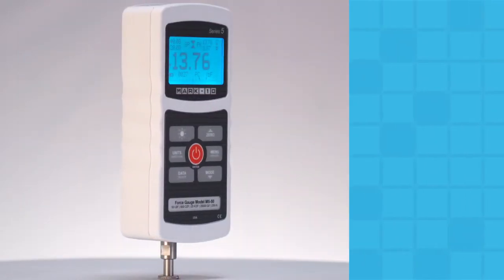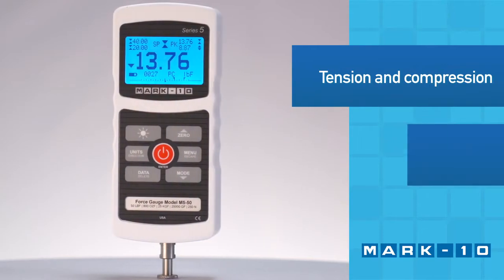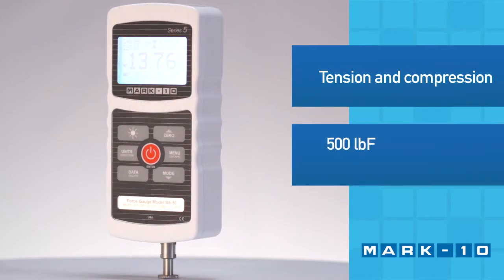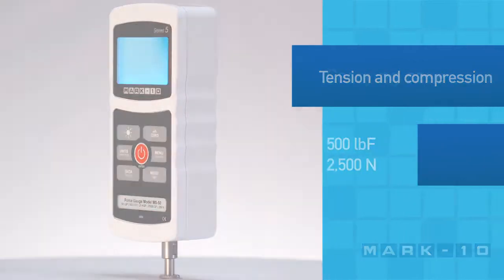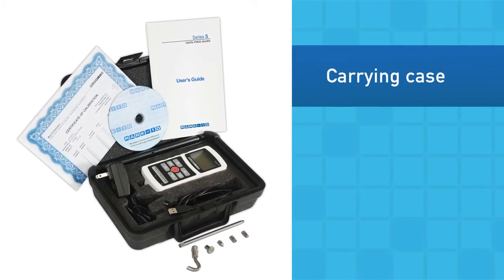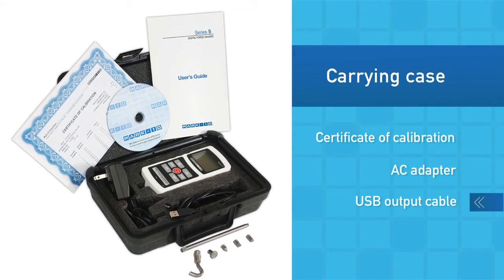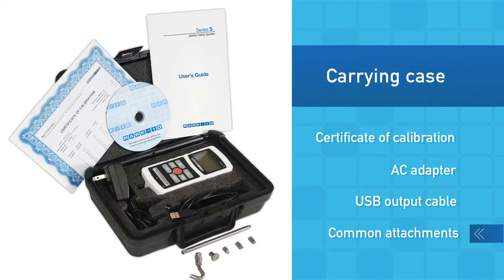The Series 5 force gauge is an advanced solution for tension and compression force measurement with capacities up to 500 pounds of force or 2,500 newtons. The force gauge is supplied in a cushioned carrying case with certificate of calibration, AC adapter, USB output cable, and a set of common attachments.